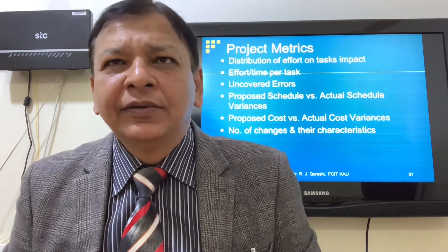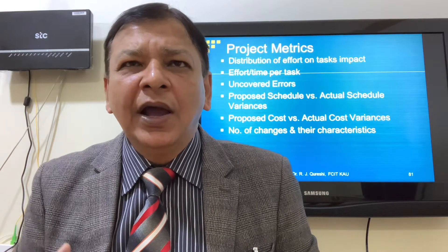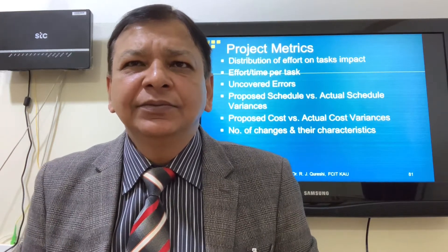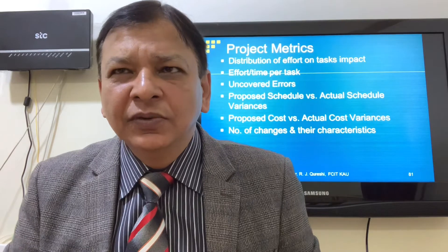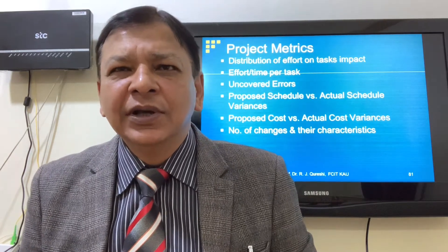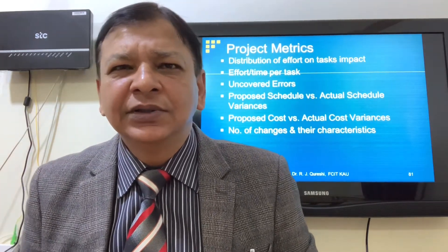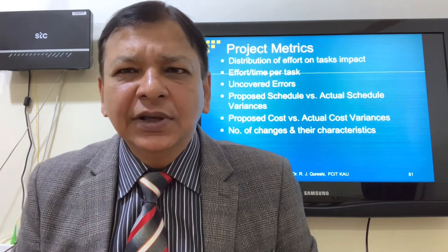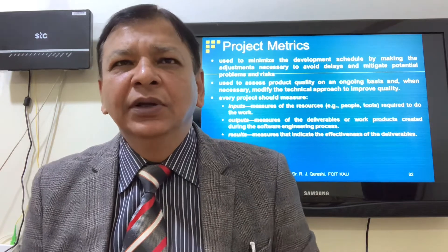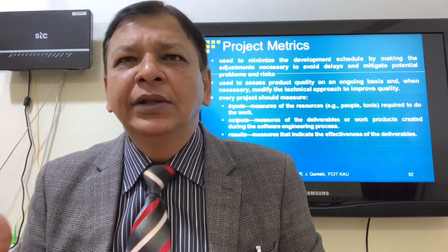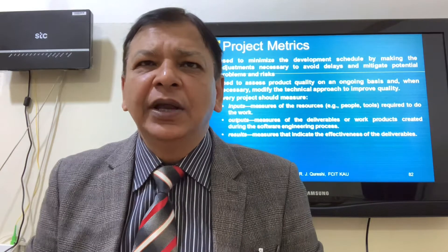Project matrix includes: distribution of effort on tasks by impact, effort over time per task, uncovered errors, proposed schedule versus actual schedule variances, proposed cost versus actual cost variances, and number of changes and their characteristics. Project metrics are used to minimize the development schedule by making adjustments necessary to avoid delays and mitigate potential problems and risks.